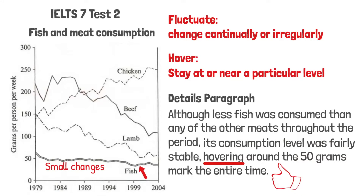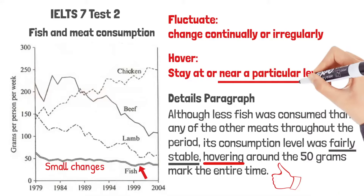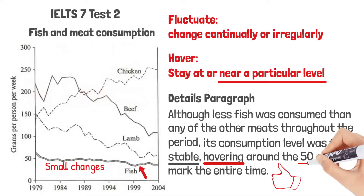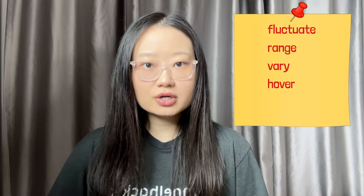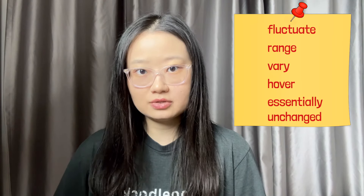Hover is a very good word choice here. I first said 'fairly stable,' which implies some slight fluctuations. Hover suitably describes a gentle move up and down around a fixed position, which is the 50 grams mark. In short, we use hover when there is only little change, but use fluctuate when the number varies irregularly. So when fluctuate doesn't work, try range, vary, hover, or essentially unchanged.